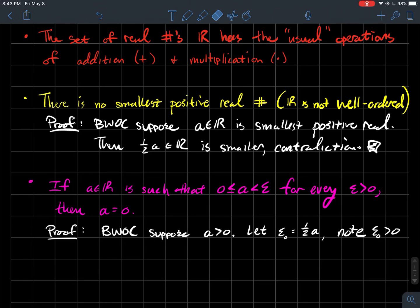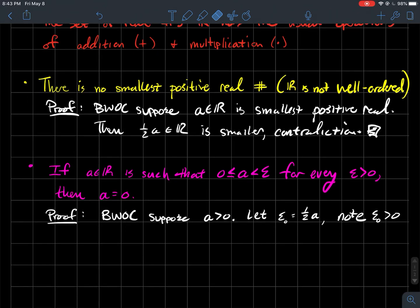So by way of contradiction, let's say that you had A, let's say that it's greater than zero. What if you took epsilon to be just one half of A? Well, that's still a positive number. And by the way, I added the subscript here to epsilon just because it's a specific one of these epsilons here.